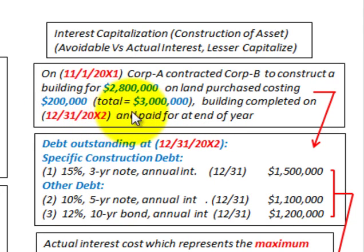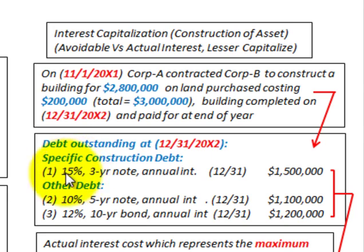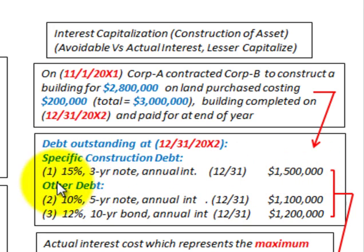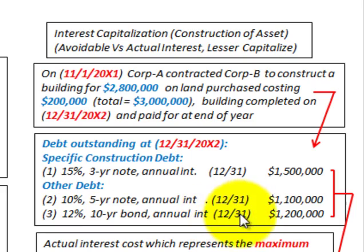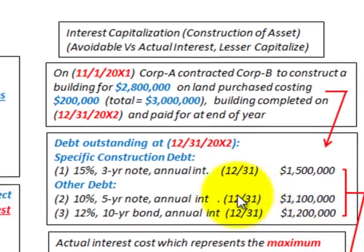When dealing with interest capitalization, we have to determine the total debt outstanding for the company at 12-31-20X2. We break it down into specific construction debt — a 15% three-year note with annual interest paid at year-end for $1.5 million — and other debt: a 10% five-year note and a 12% 10-year bond, both with annual interest paid at year-end.